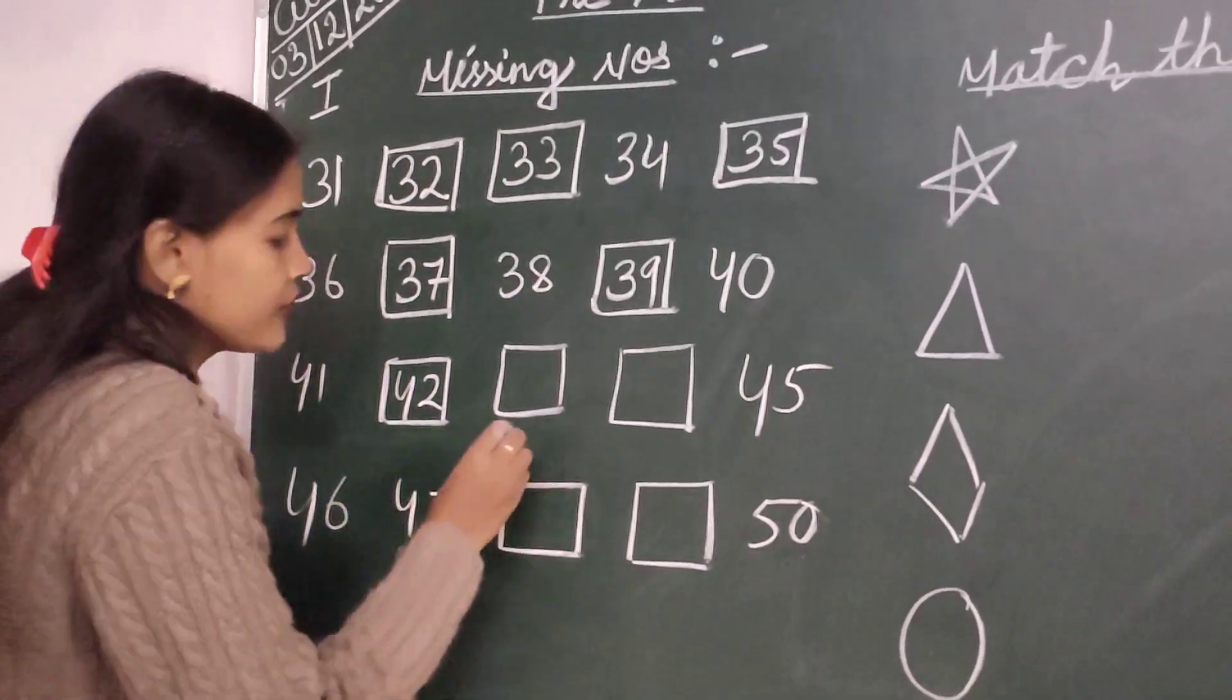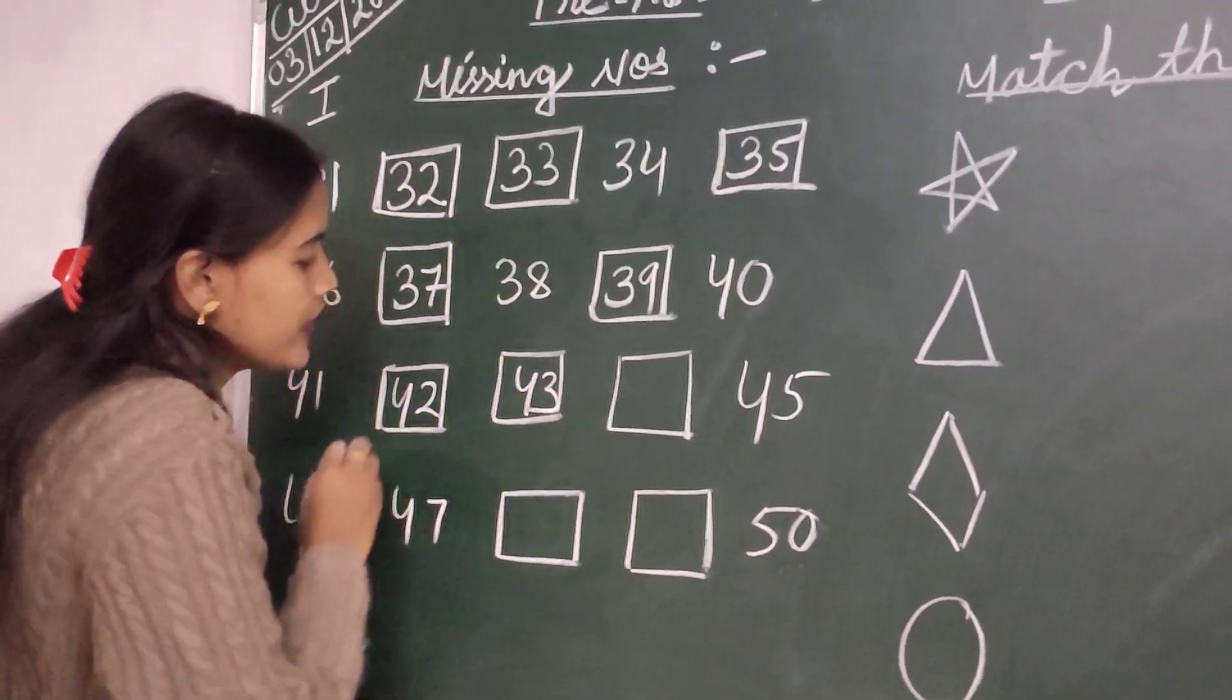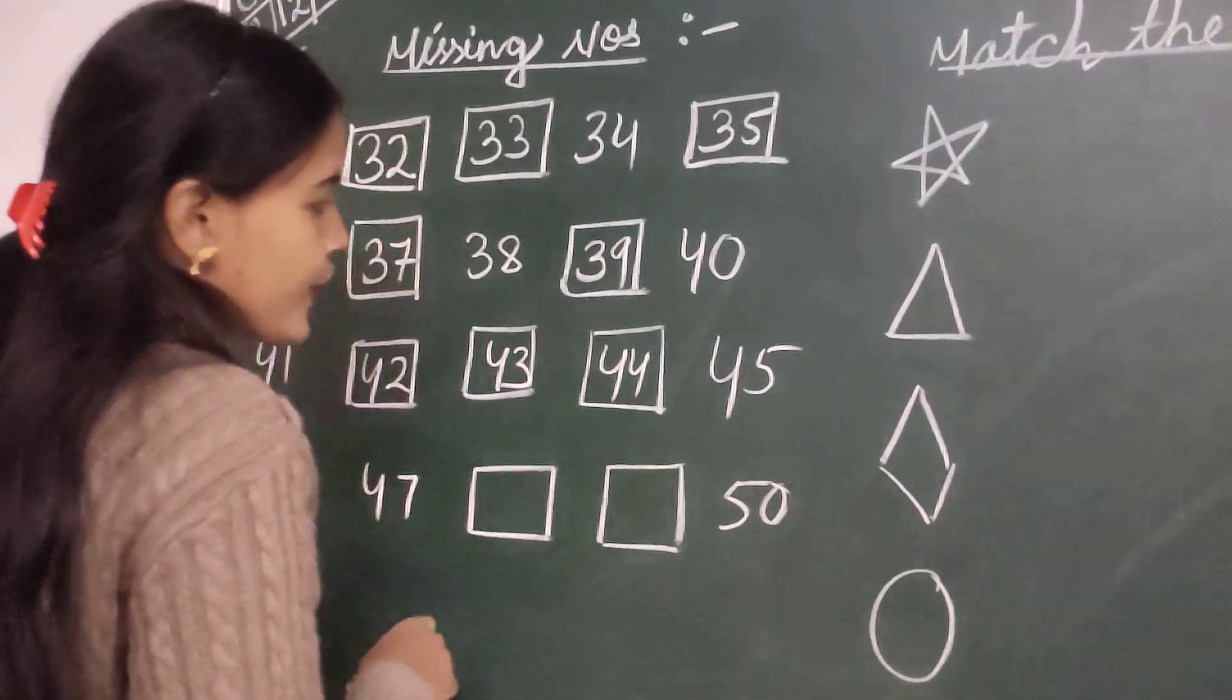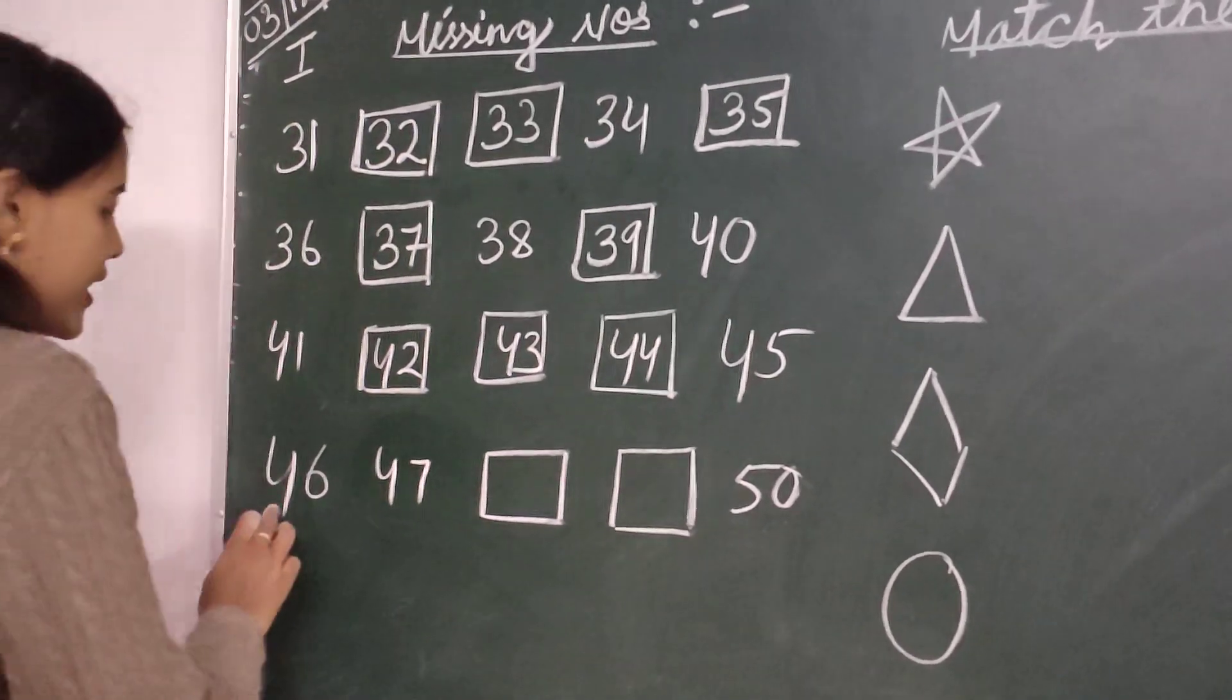42, 42 come after 43, 43. Next, 44, 44. 45, 45.